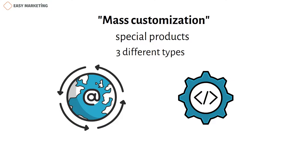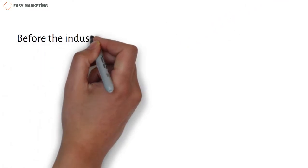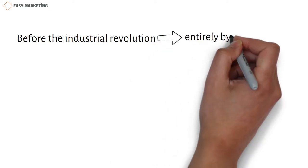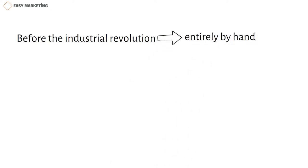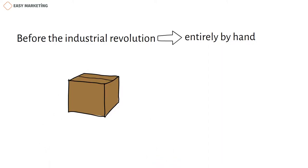But before we talk about these three types, let's discuss how manufacturing systems have evolved over time. Before the Industrial Revolution, products were made entirely by hand and met the wishes of the buyer. At that time, the number of products produced was small, and the price was high.